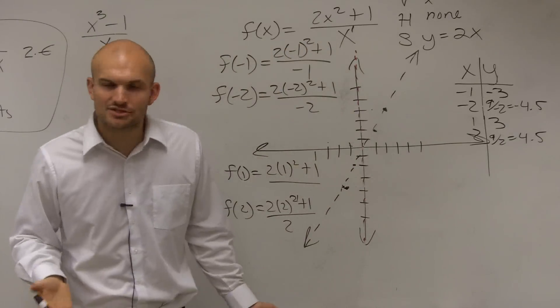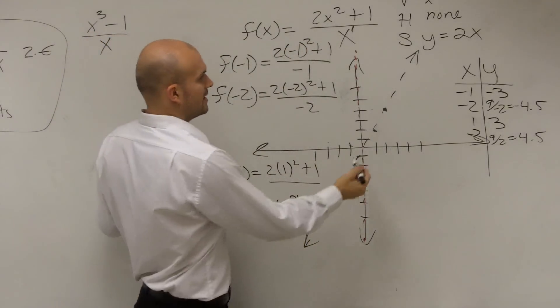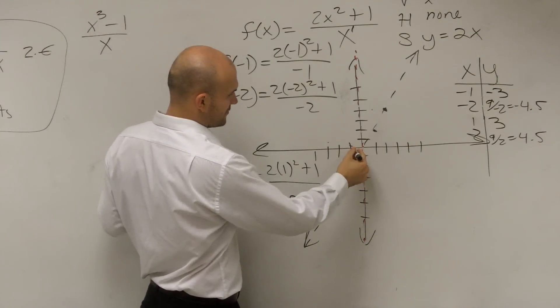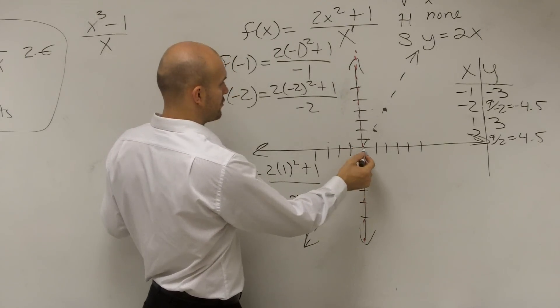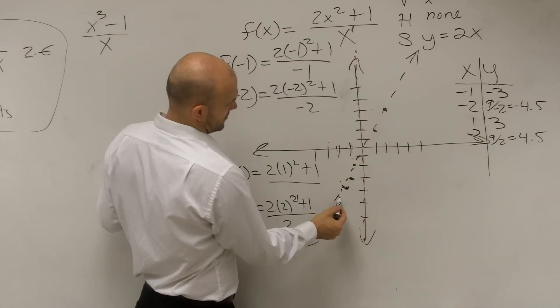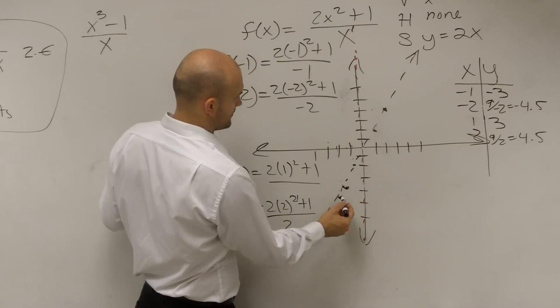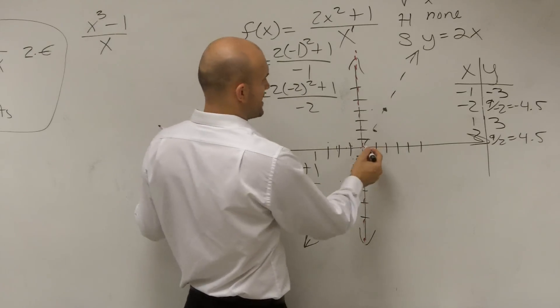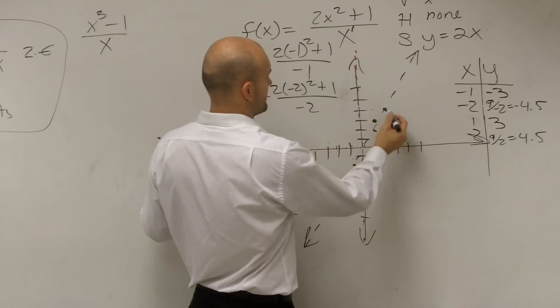So let's just go and plot these, just so you guys can see what it looks like. So you can see that they don't have any x and y intercepts. So at negative 1, I'm at negative 3. 1, 2, 3. At negative 2, I'm at 4.5. Negative 1, 2, 3, 4.5. And let's say at 1, I'm at 3. And then at 2, I'm at 4.5.